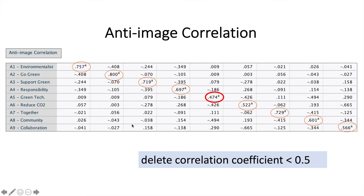And if you have more than one item having a value less than 0.5, then you will also delete that item. However, be careful — you delete the items one by one, not together.